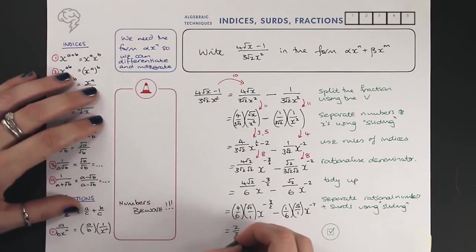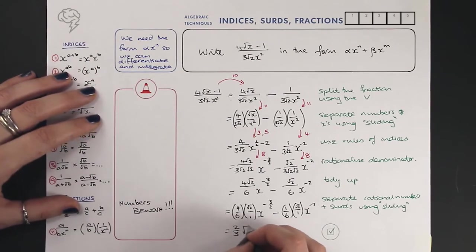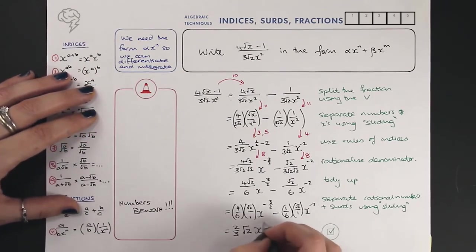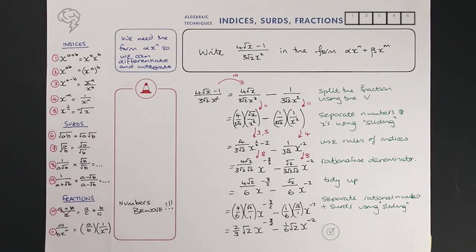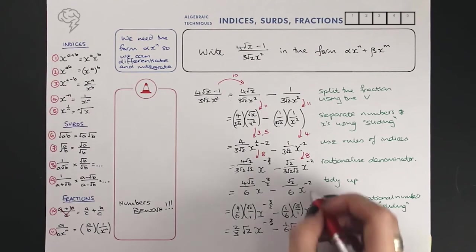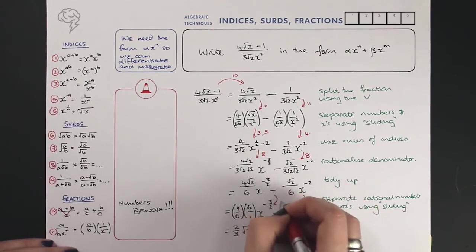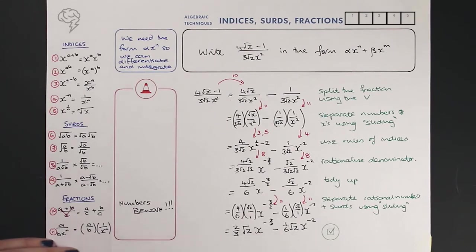Four over six simplifies to two thirds. We've got root two divided by one, which is root two, x to the minus three over two, minus a sixth root two, x to the minus two. We've used sliding again, which is 11, we use that on both terms, and then this is just tidying up.